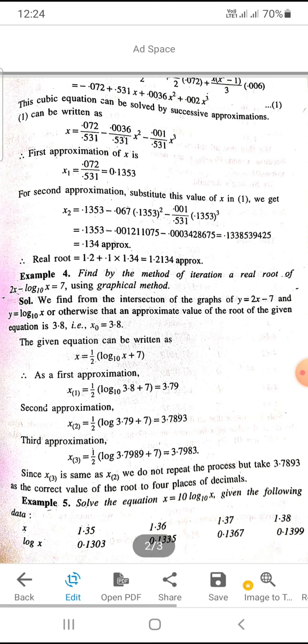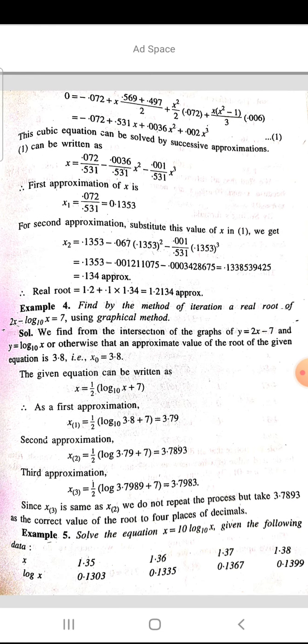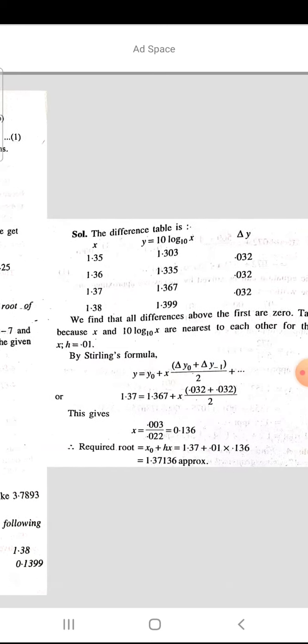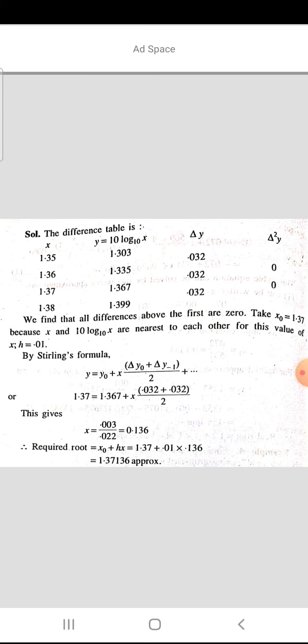Suppose we solve the equation x = 10log₁₀(x), where data is given as x: 1.35, 1.36, 1.37, 1.38, and log(x): 0.1303, 0.1335, 0.1367, and 0.1399. So the difference table will be x and y given in tabular form. Δy will be 0.032, 0.032, 0.032.